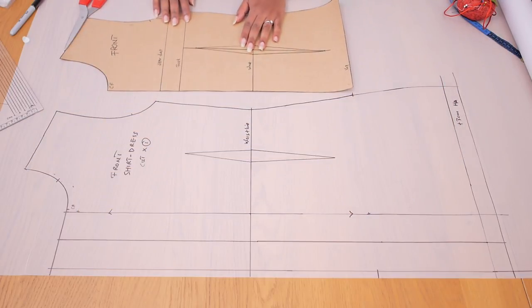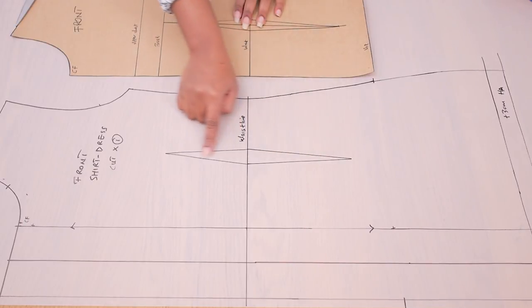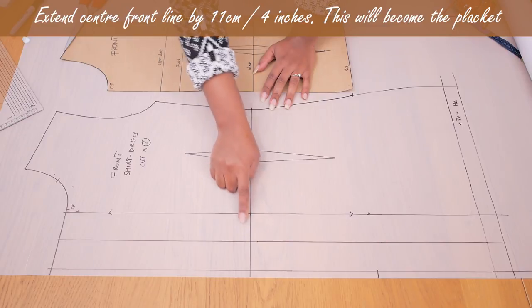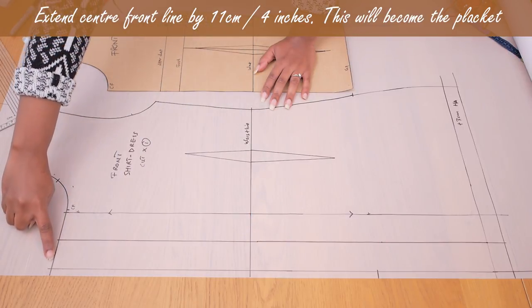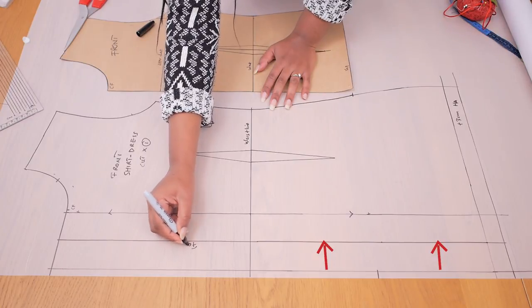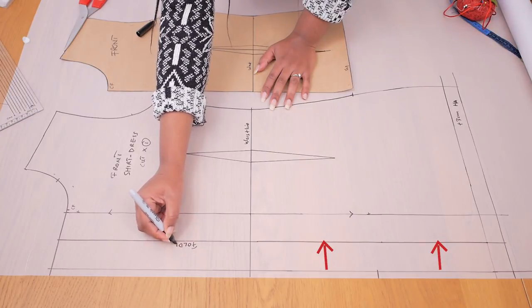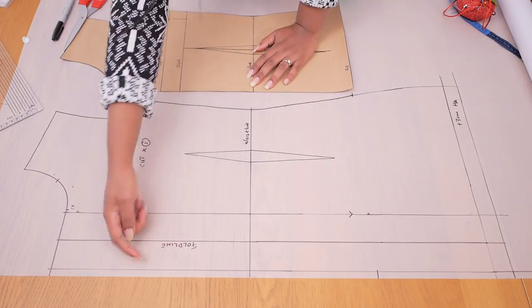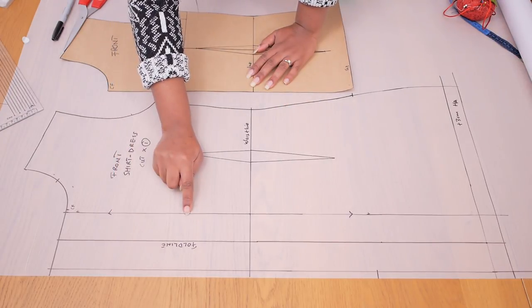I also added about an inch or three centimeters hem allowance. I transferred my front dart as well and I extended my center front by 11 centimeters or 4 inches. This is going to become our button stand because when you fold this inwards and stitch it down you have the panel on which you can fix your button and buttonholes.